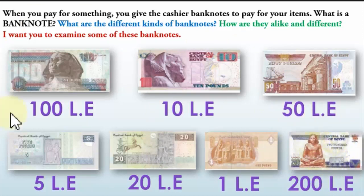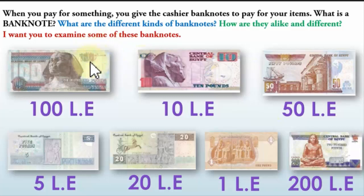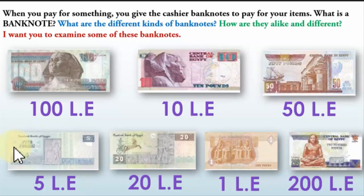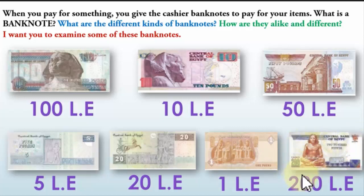These are Egyptian banknotes — each one has a value written on it. Here we have one and two zeros to the right, which is 100 pounds. Here it says 50, here 5, here 20, here 1 — one pound. And here two and two zeros to the right of two, which is 200.